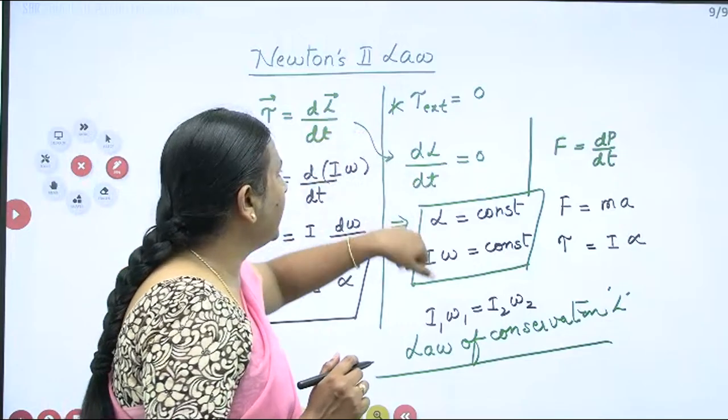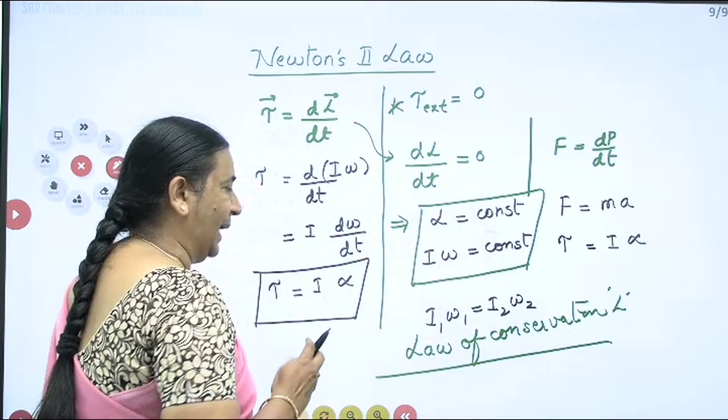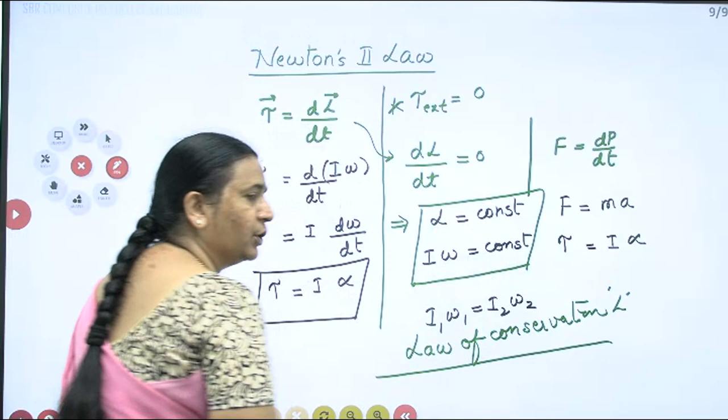If the net torque applied is 0, then dL/dt will be equal to 0, which indicates that the angular momentum is going to be constant. This is nothing but the law of conservation of angular momentum, which can be written as L = Iω = constant, or I₁ω₁ = I₂ω₂ = and so on.